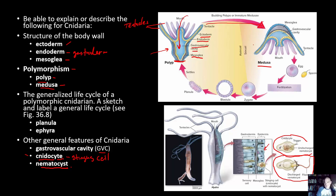The medusa is the familiar jellyfish-shaped structure — free-swimming and typically with a larger mesoglia, which gives them the common name jellyfish. The medusa still has the same basic structure: ectoderm, endoderm, mesoglia, and gastrovascular cavity, with the mouth underneath and tentacles radiating outward with radial symmetry, bearing cnidocytes.